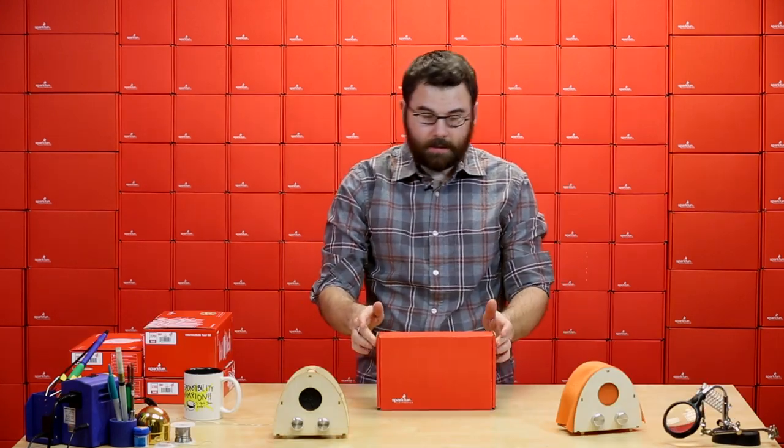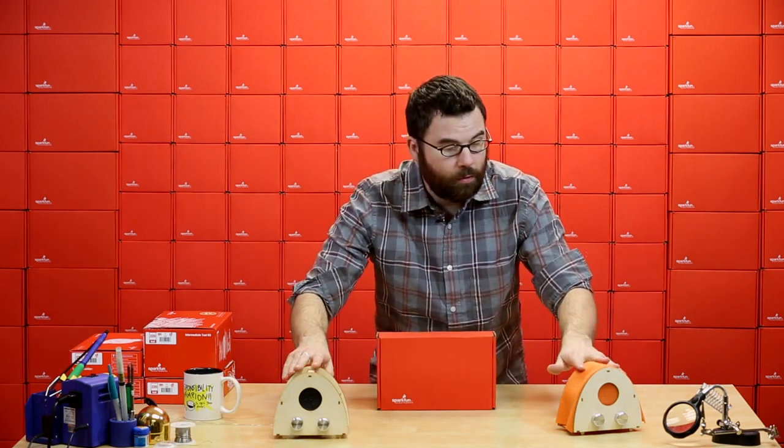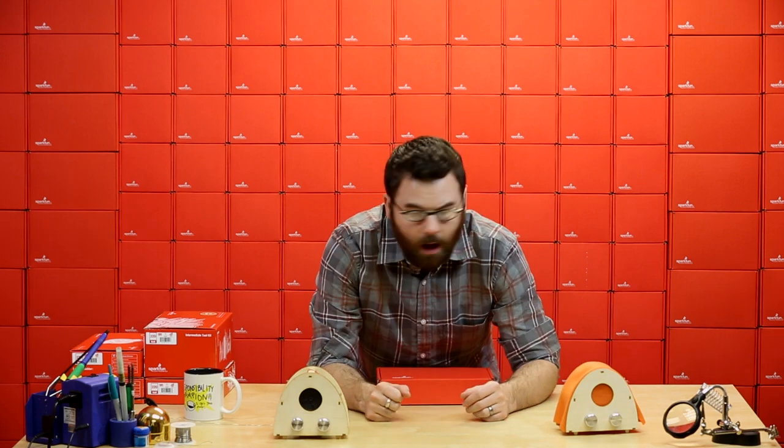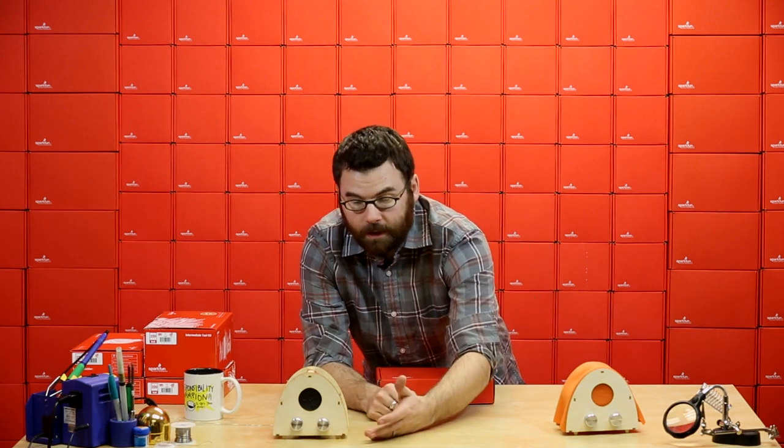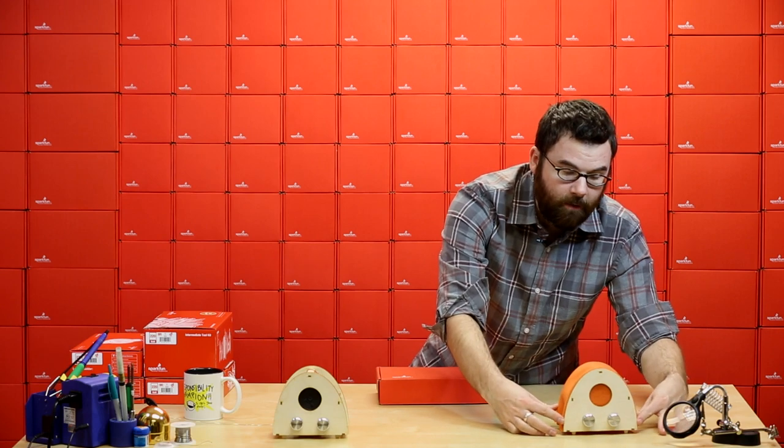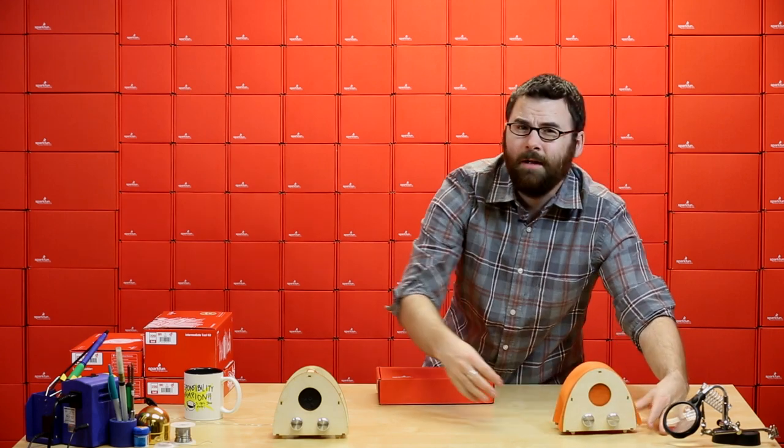Next up we've got this. This is the Fab FM radio kit. We've got two built-up examples right here. We've got this one which is just the standard one that comes with the kit and then on this one we've actually had a little bit of felt around it to give it a little bit more style and an enclosure.